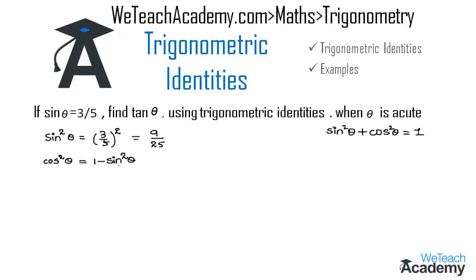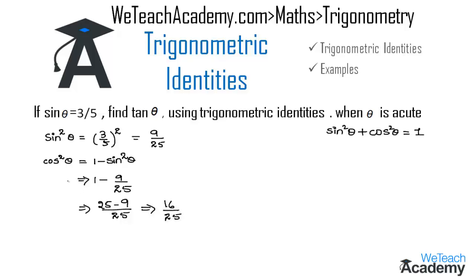Substituting the value of sine square theta, we get 1 minus 9 by 25, and by simplifying we get 25 minus 9 divided by 25. By subtracting we get 16 by 25, which is the value of cos square theta.